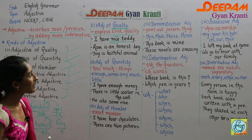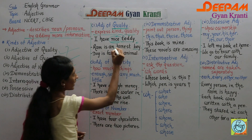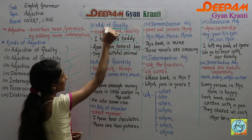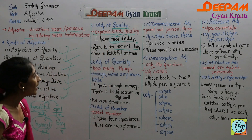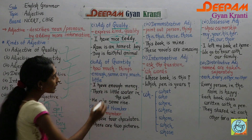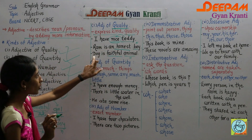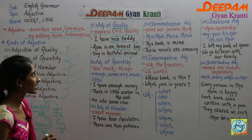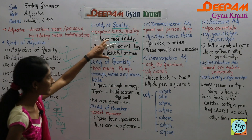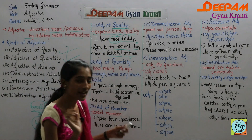More examples of adjective of quality: 'Ram is an honest boy' — here 'honest' shows the quality of Ram, so it is an adjective of quality. 'Dog is a faithful animal' — 'faithful' shows the quality of the dog, so 'faithful' is an adjective of quality. In short, adjective of quality words show the kind and quality of that particular noun or pronoun.